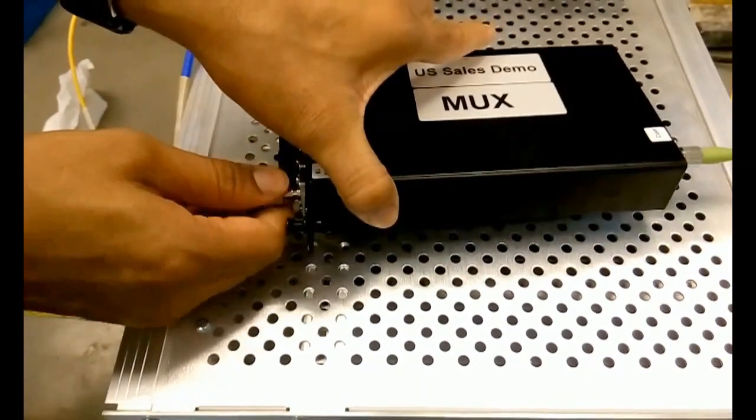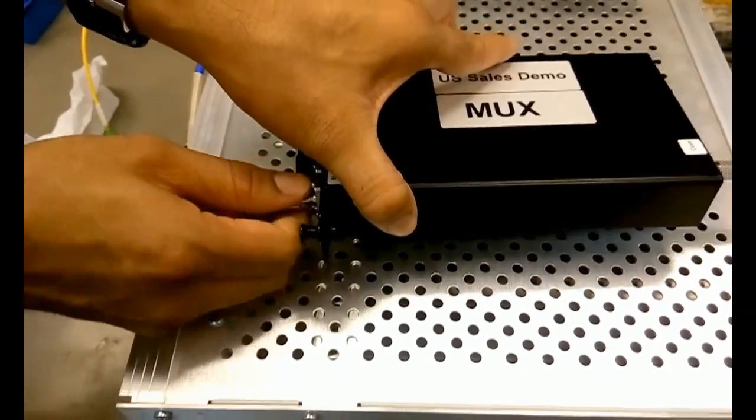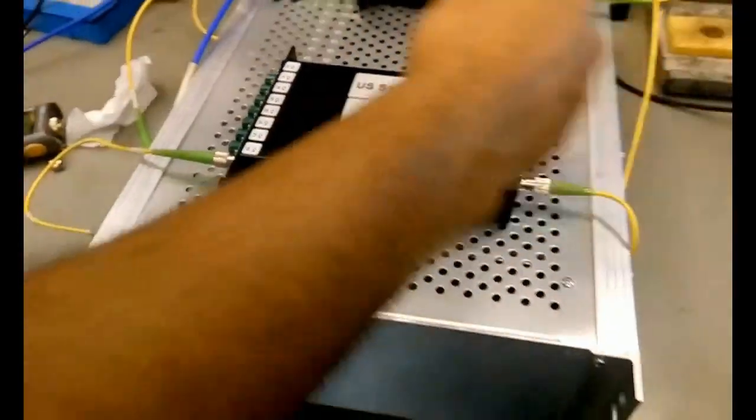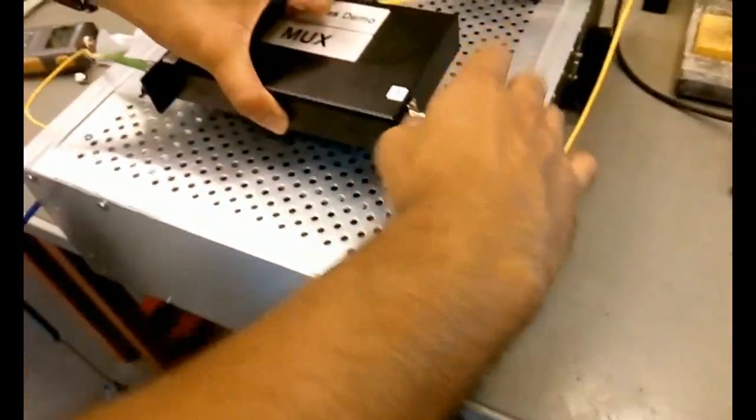Step 2. Connect the transmitter to the MUX. This will be our first optical drop in power. An 8-channel MUX will give us a loss of about 1.2 dB.